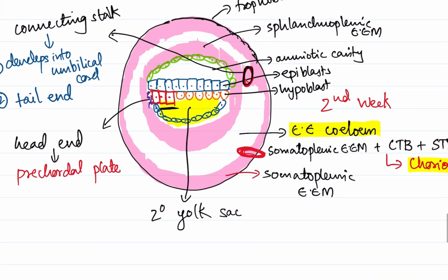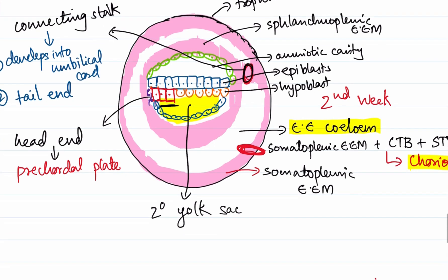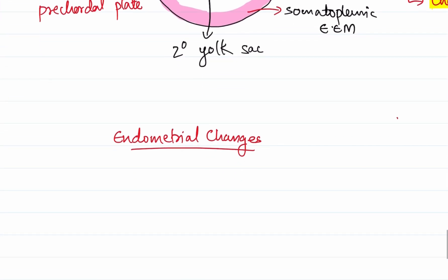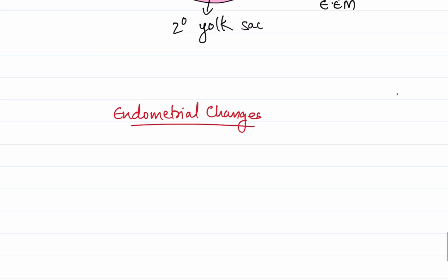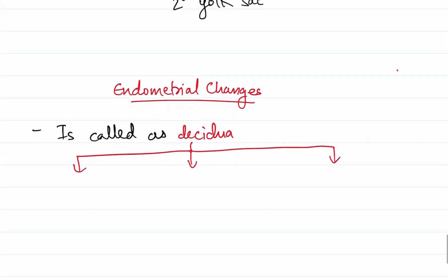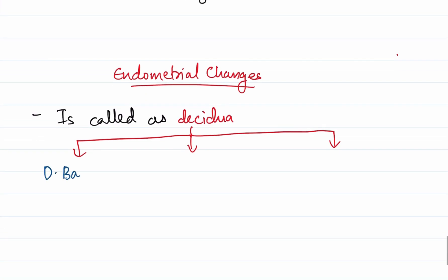We have discussed the changes occurring at the level of the cytotrophoblast and syncytiotrophoblast. Coming finally to a very short topic — what happens to the endometrium? The endometrium undergoes a name change: once implantation occurs, it is called the decidua. The decidua is differentiated into three parts: the decidua basalis, the decidua capsularis, and the decidua parietalis.